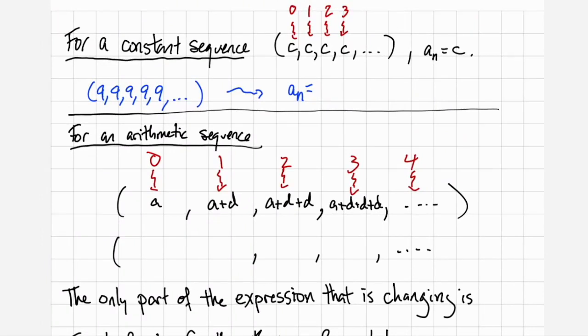The simplest here is a constant sequence. A sequence that looks like this where every term is exactly the same. In that case the function is just that constant itself, a sub n is equal to c. So for the sequence 9 9 9 9 9, a sub n would be equal to 9.